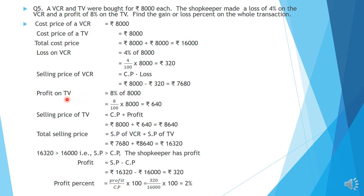Profit on TV is 8% of 8,000: 8 by 100 into 8,000. Two zeros cancel, leaving 80 into 8 equals Rs. 640. So profit on TV is Rs. 640. Selling price of TV equals CP plus profit: Rs. 8,000 plus Rs. 640 equals Rs. 8,640. Total selling price equals SP of VCR plus SP of TV: Rs. 7,680 plus Rs. 8,640 equals Rs. 16,320. Since Rs. 16,320 is greater than Rs. 16,000, SP is greater than CP.